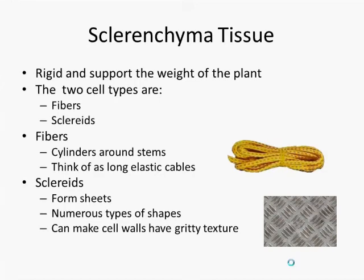Sclereids are also sclerenchyma cell types, but instead of cylinders, they come in sheets. Sclereids take numerous shapes and have cell walls with a gritty texture. They are also used for structural support.